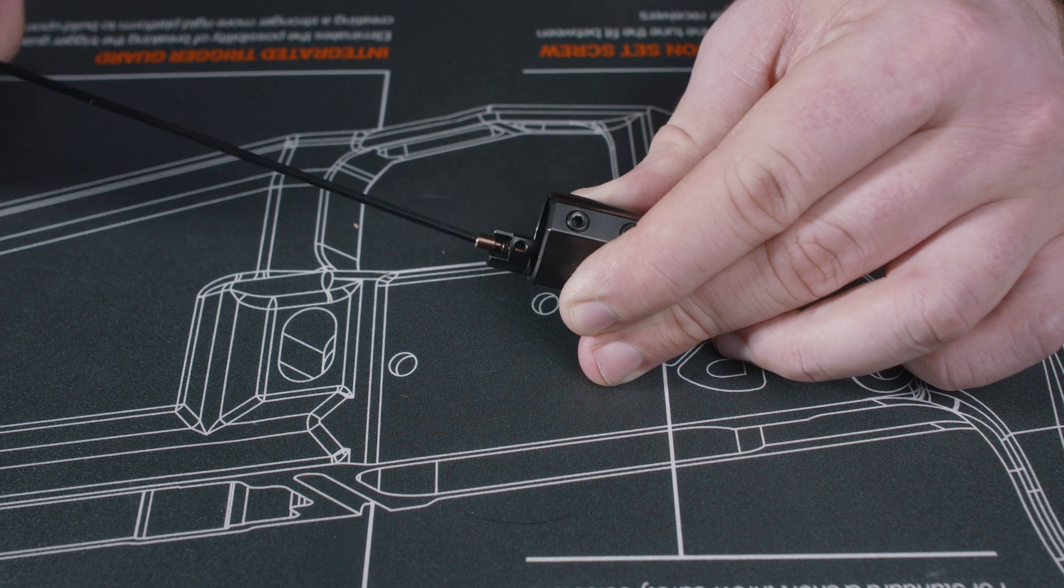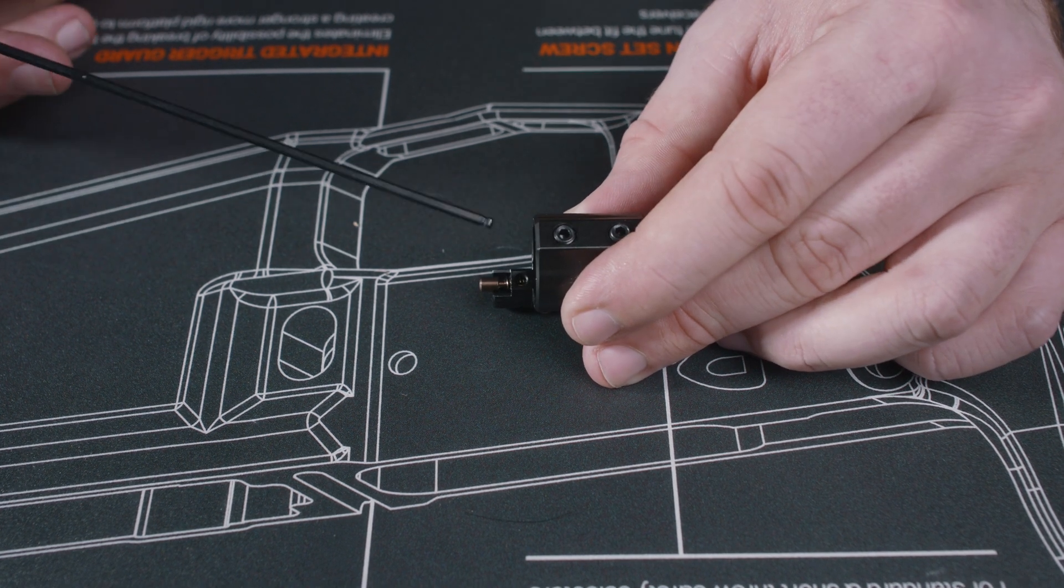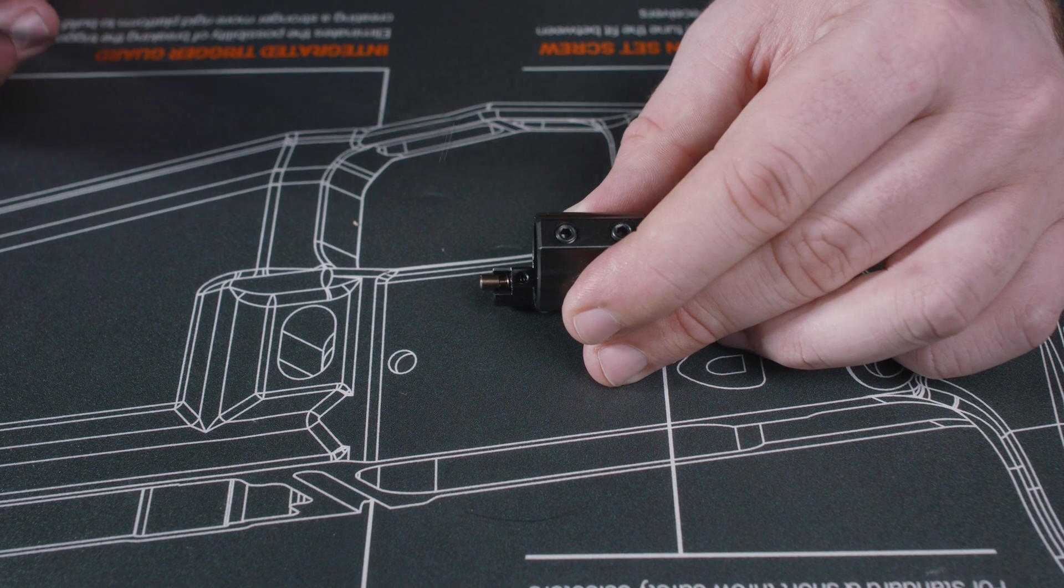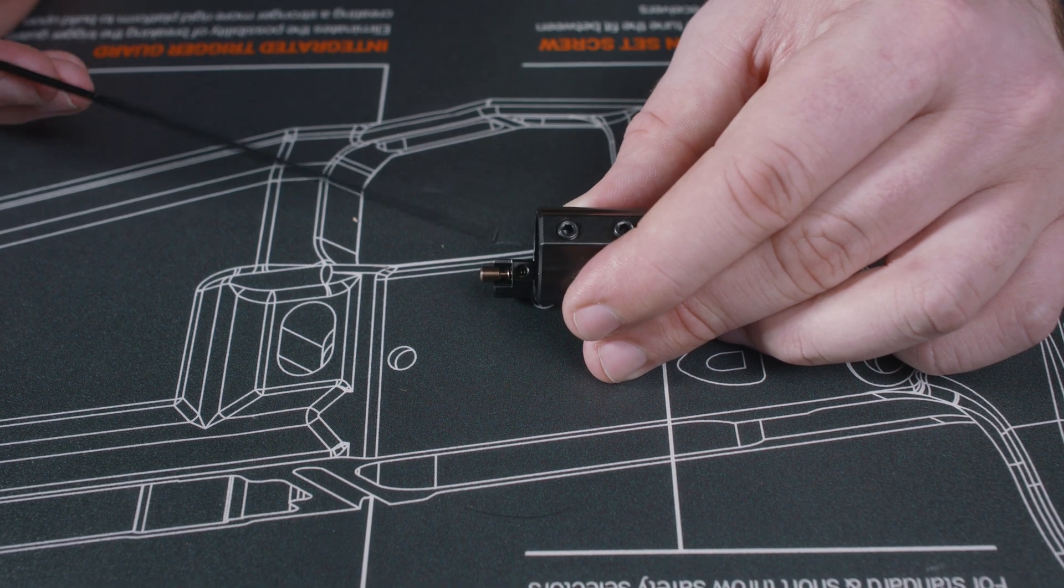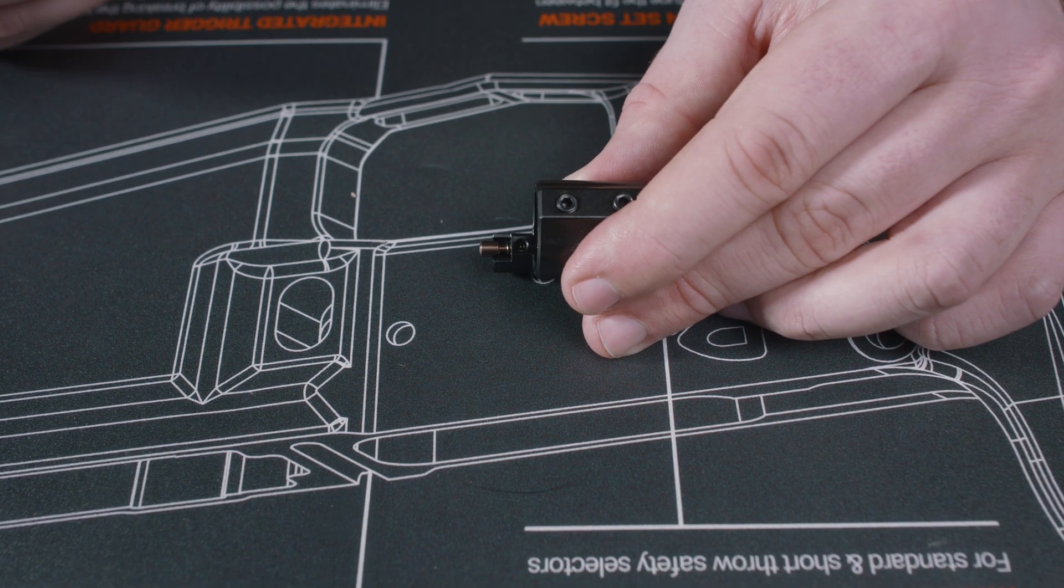So that shows us that we installed everything the way we were supposed to and you're going to want to screw this in to the point where it does click like that and it is in that audible range. Otherwise, that detent and spring aren't going to be doing anything to keep the screw in place when you're shooting. So if you're hearing those clicks when you're adjusting it, you're good.